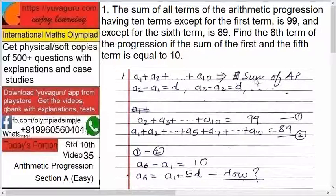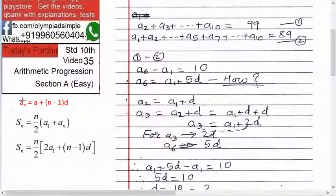Two formulas we have to always remember in an AP. First is how to find the nth term: aₙ equals a plus (n minus 1) into d, where a is the first term and n is the number of terms.